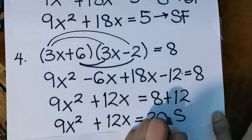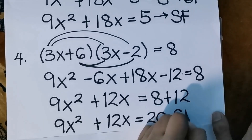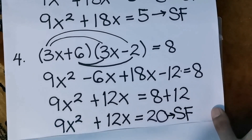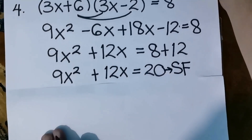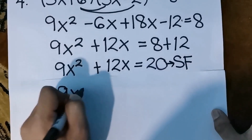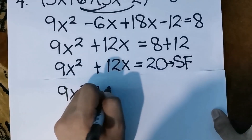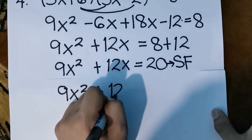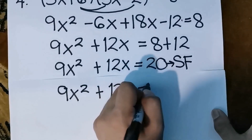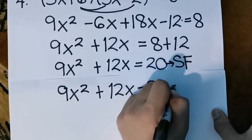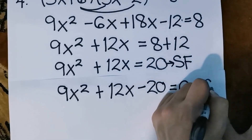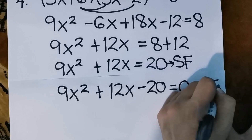For the general form, we have 9x squared plus 12x, and moving 20 to the left side it becomes negative 20, so the general form is 9x squared plus 12x minus 20 equals to 0. This will be our general form.